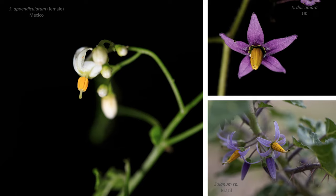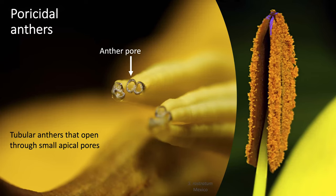Part of the reason why this floral morphology is relatively conserved in the group has to do with the function of the flowers. One key characteristic is the type of anthers they have. On the right-hand side of the slide you can see the typical angiosperm anther that, when mature, opens through a longitudinal slit, exposing pollen grains passively to pollinator visits. On the left is the typical Solanum anther that remains closed, and the only place for pollen to exit is through small apical pores pointed out with a white arrow.